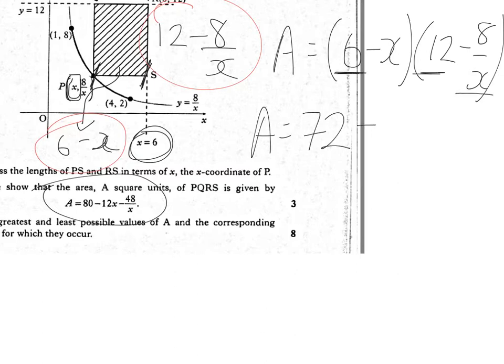6 times minus 8 over x is minus 48 over x. Inside is minus x times 12, that's minus 12x. And last, minus x times minus 8 over x is going to be, well, the x's will cancel and that will be plus 8.